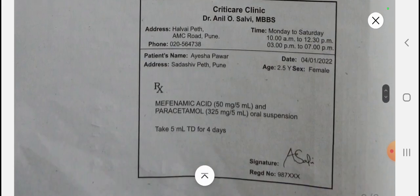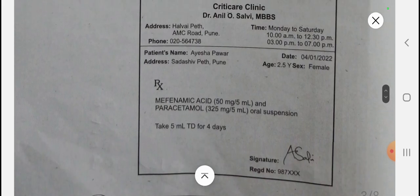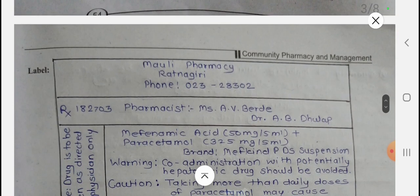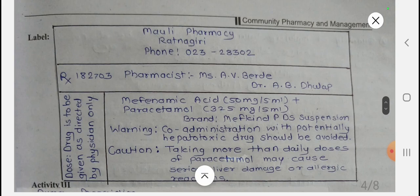Activity Two: from the prescription and data given, we have to prepare the dispensing label containing the auxiliary label. The medicine is Mefenamic acid and Paracetamol, brand name Mafkine PDS suspension. The dose is as directed by physician only. Warning: co-administration with potentially hepatotoxic drugs should be avoided. Caution: taking more than daily doses of paracetamol may cause serious liver damage or allergic reaction.